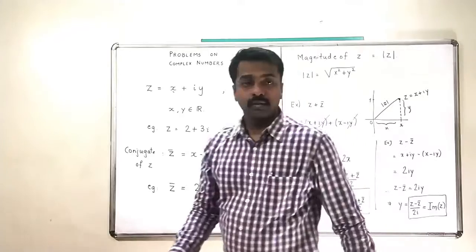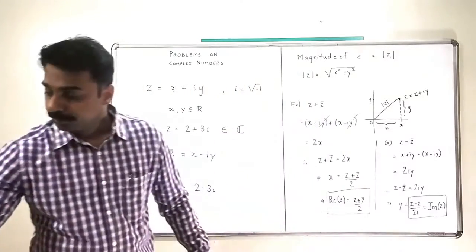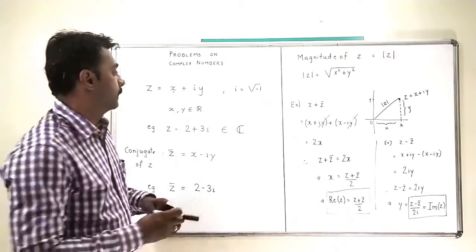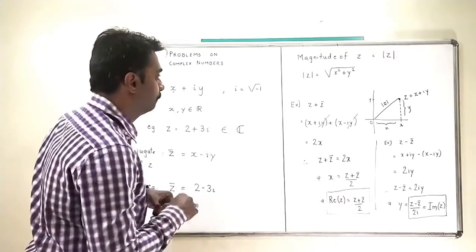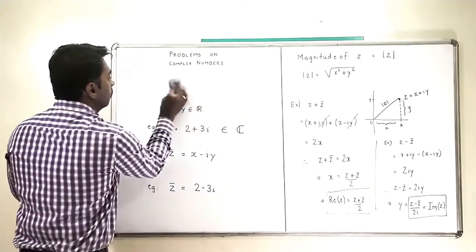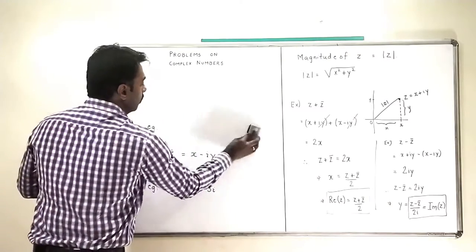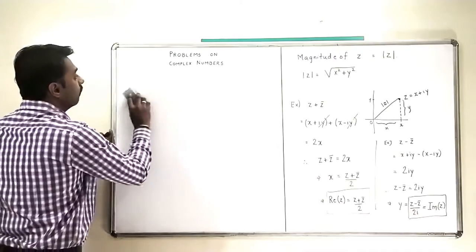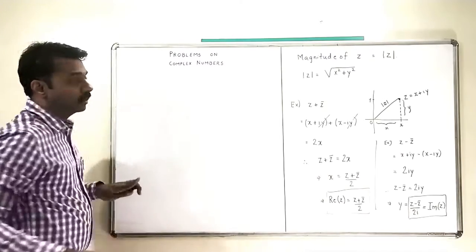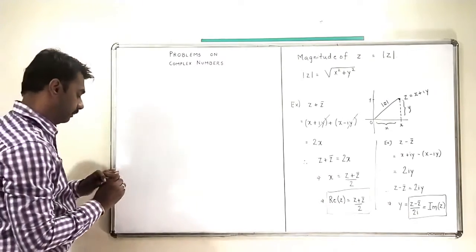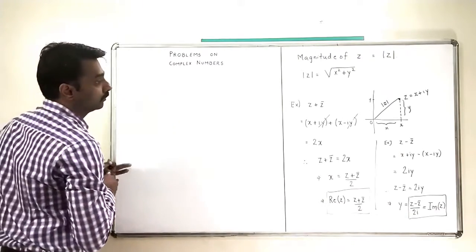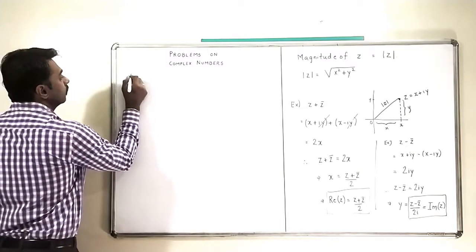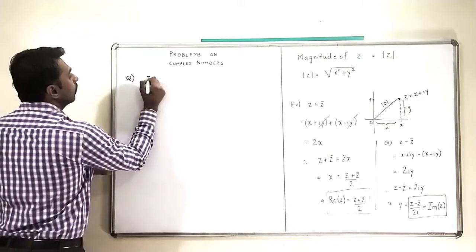So we have derived two equations from this basic stuff. Now let us proceed to the next part. Now we will take two complex numbers.